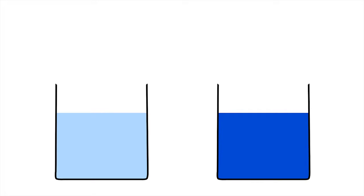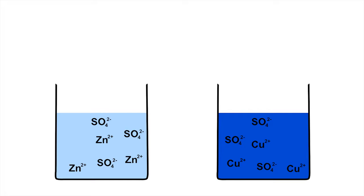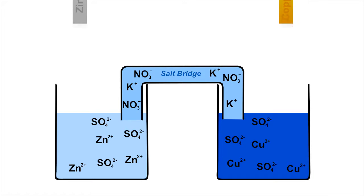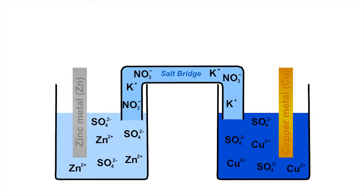Consider a scenario in which two separate beakers of electrolyte, one containing a solution of copper sulfate, and the other a solution of zinc sulfate, are linked by a salt bridge containing a third electrolyte, such as potassium nitrate. Strips of the metal copper and the metal zinc are dipped into each solution respectively, to act as electrodes.